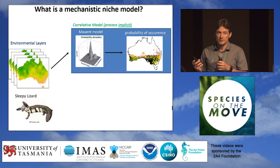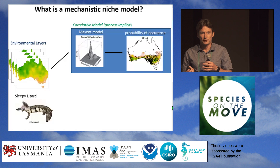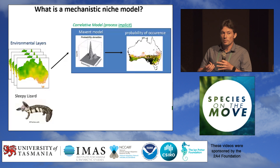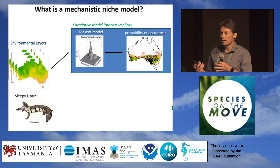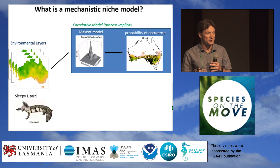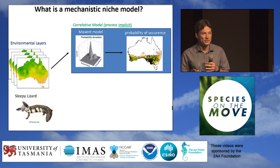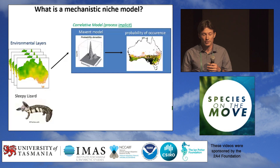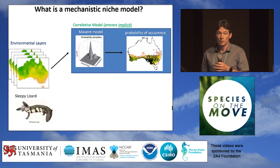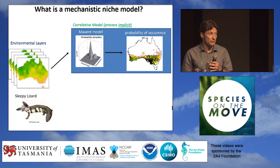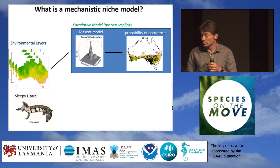That advantage of the correlative modelling approach is also a limitation, because we can't unpack our model and find out what processes we captured. That may be important from a pure scientific point of view, but also from a management point of view if we want to actually change any of those processes. Camille gave some examples about how knowing the details of these processes can be really useful.